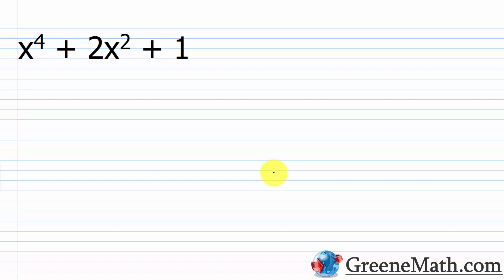The way we do the substitution technique is we let another variable — a lot of times you see u, or z, or q, pick whatever you want — be equal to the variable raised to the smaller power. So in this case, the smaller power is x squared, so we're going to say let u be equal to x squared.